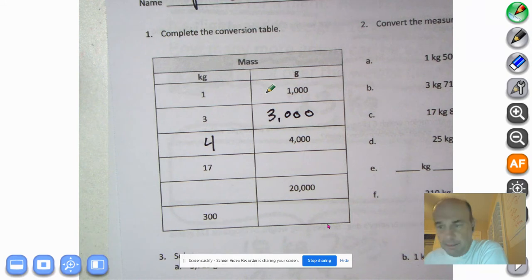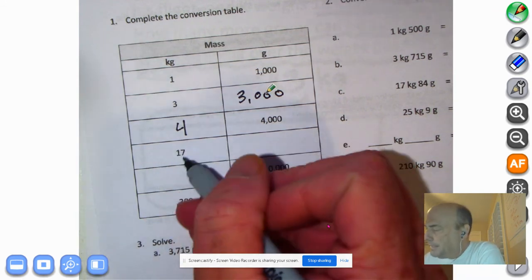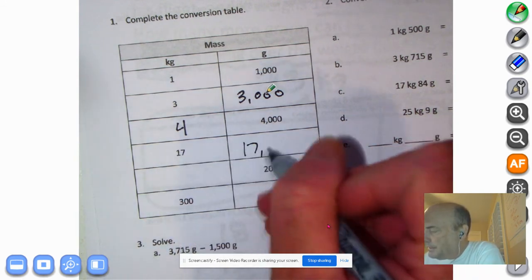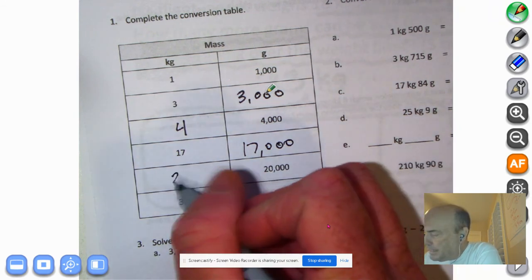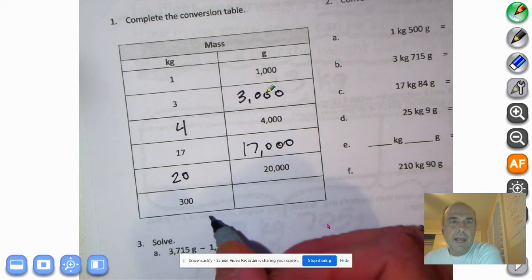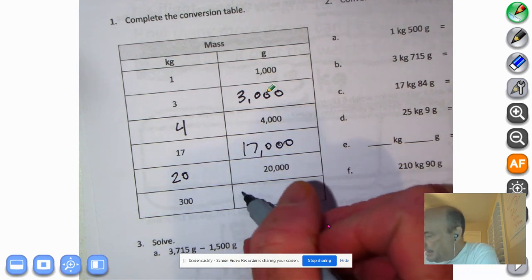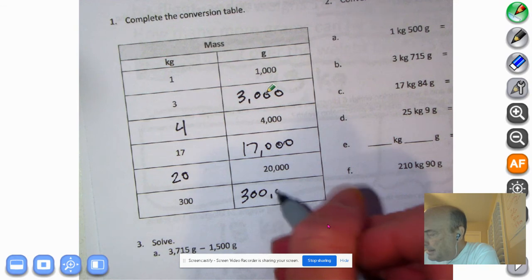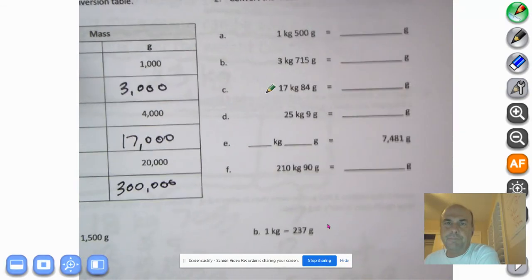Welcome back, you fabulous fourth graders. I hope you got this all right. Remember, if you're not trying this on your own, you're not going to pick it up. You're not going to learn it. 17 kilograms would be 17,000 grams. 20,000 grams would be 20 kilograms. And 300 kilograms, 300 dictionaries, or 300 bottles of water, that would equal 300,000 grams. Hope you got that all right.